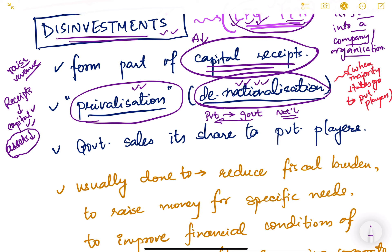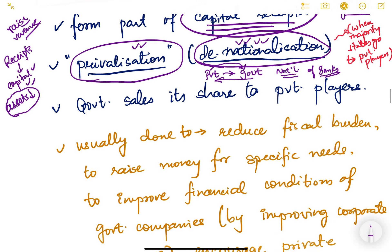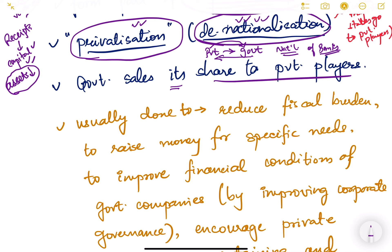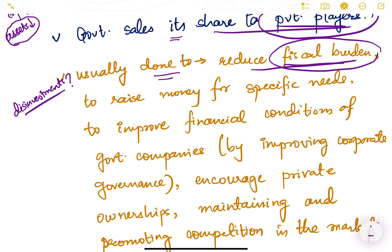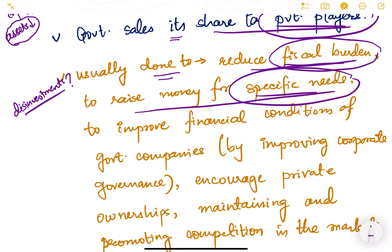Disinvestment is also known as denationalization. When a government company becomes private, it is called denationalization. But when a private company is taken over by the government, it is known as nationalization — as we have seen in the nationalization of banks. In essence, the government sells its shares to private players; this is what disinvestment means.